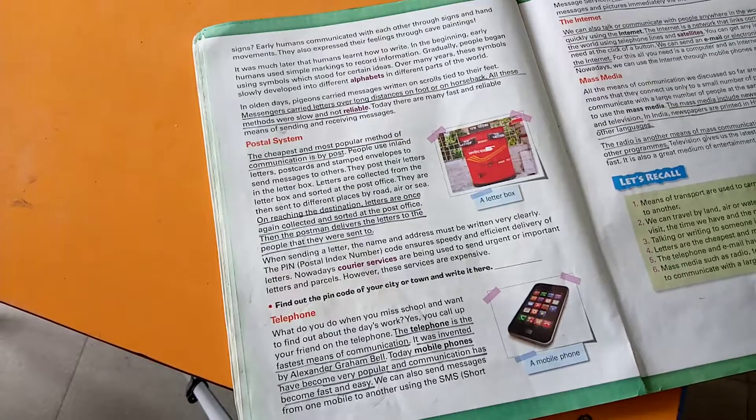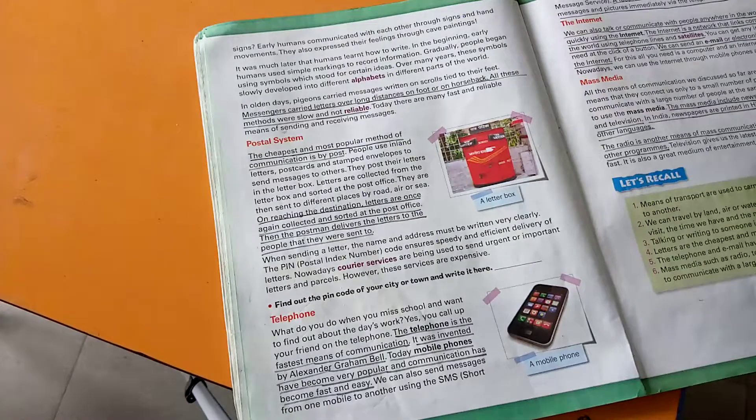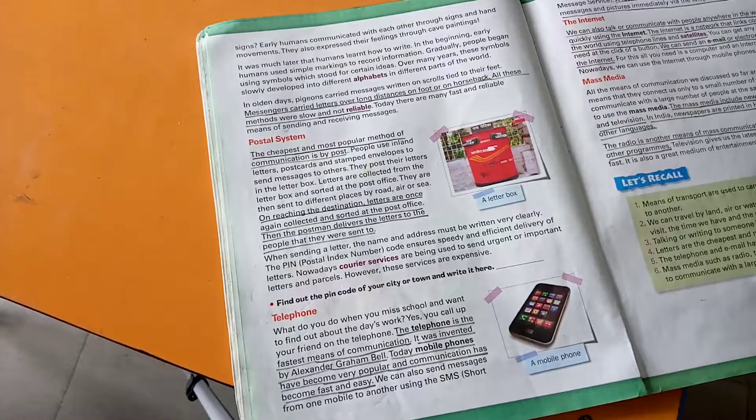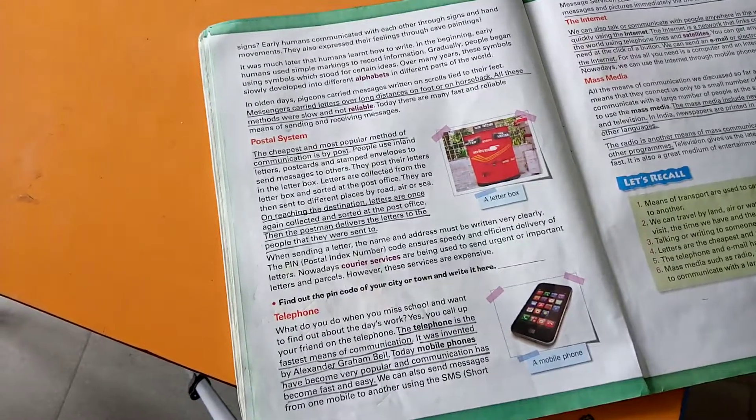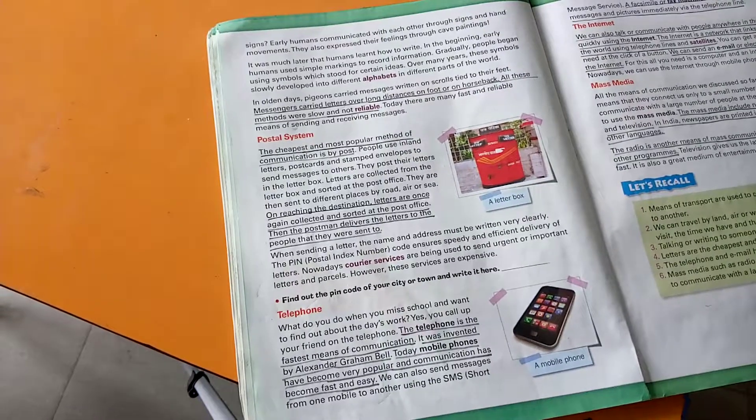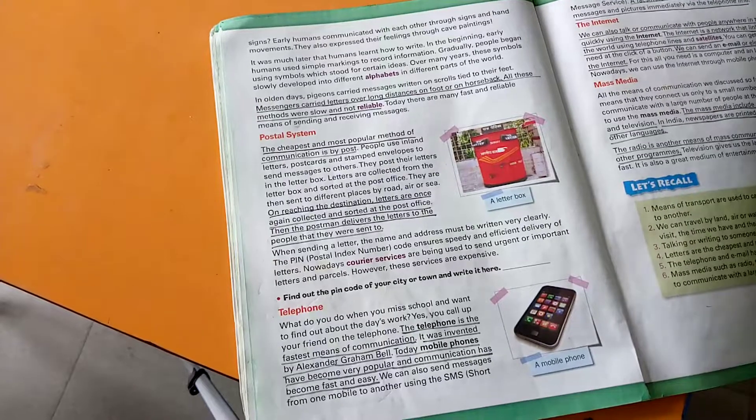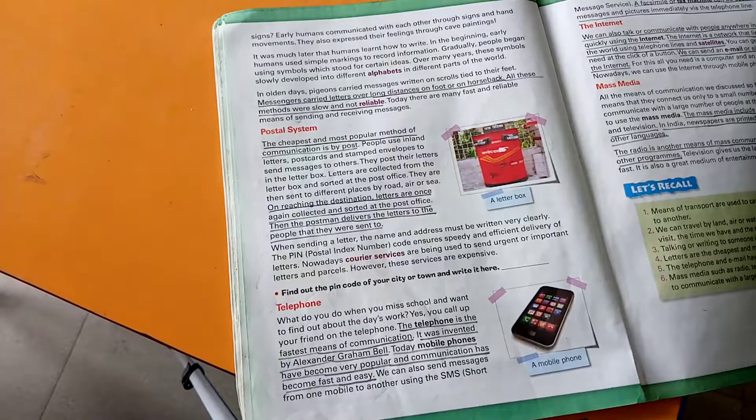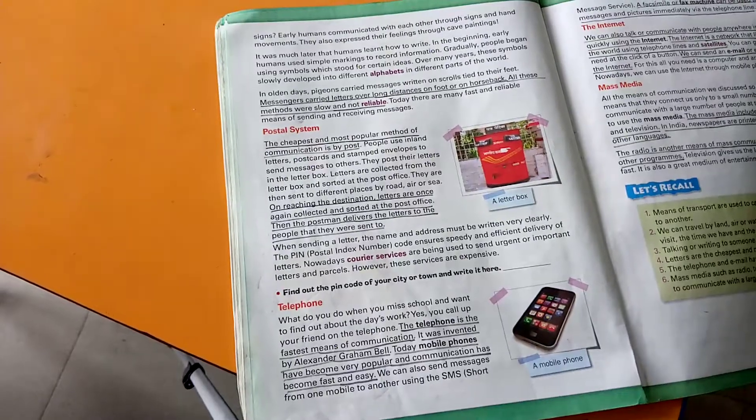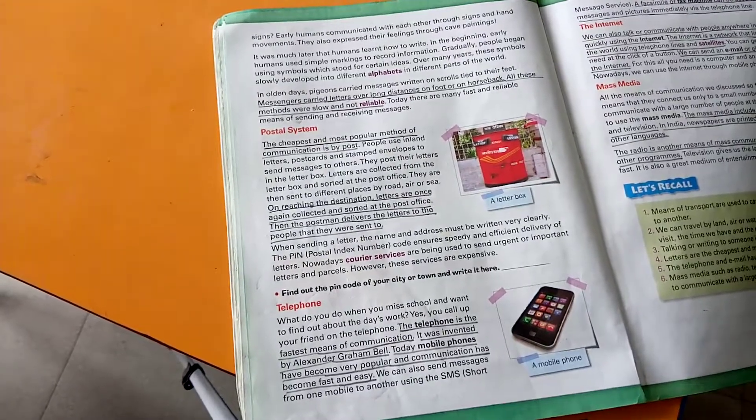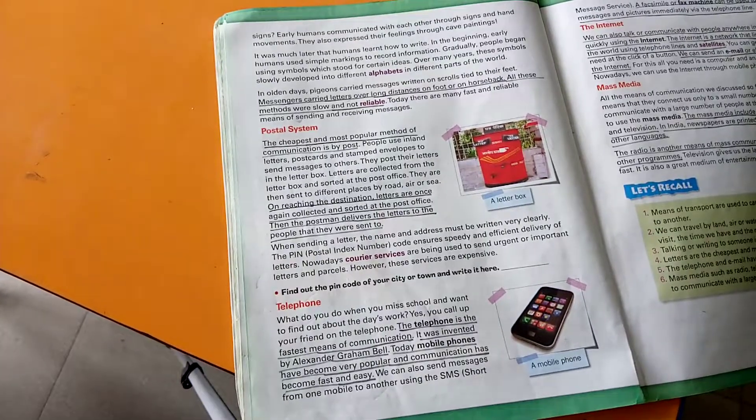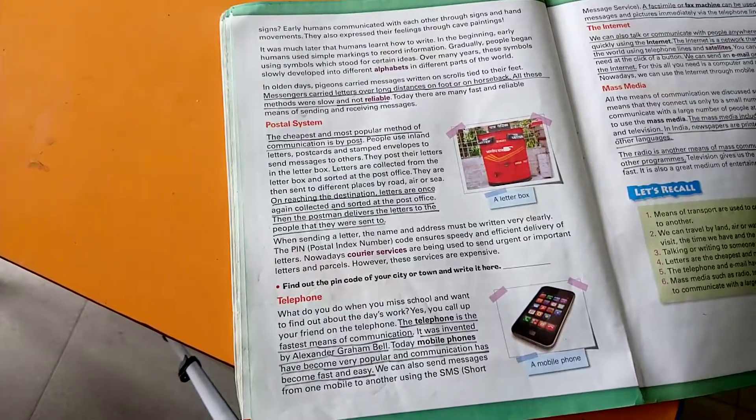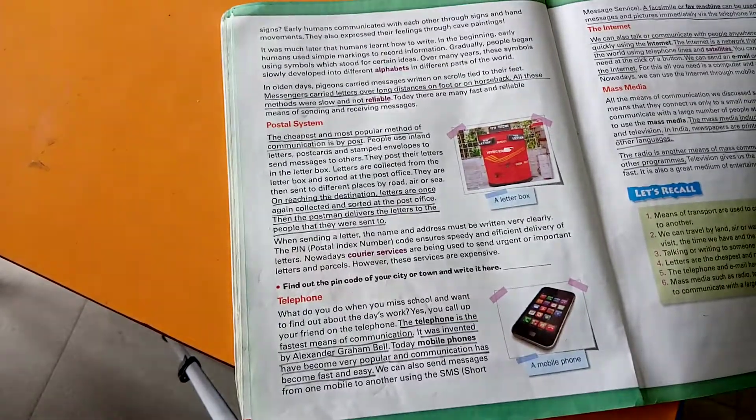Early humans communicated with each other through signs and hand movements. They also expressed their feelings through cave paintings. Early people used to live in caves in ancient times. They used to paint on cave walls to express their views and ideas with each other. It was much later that humans learned how to write.